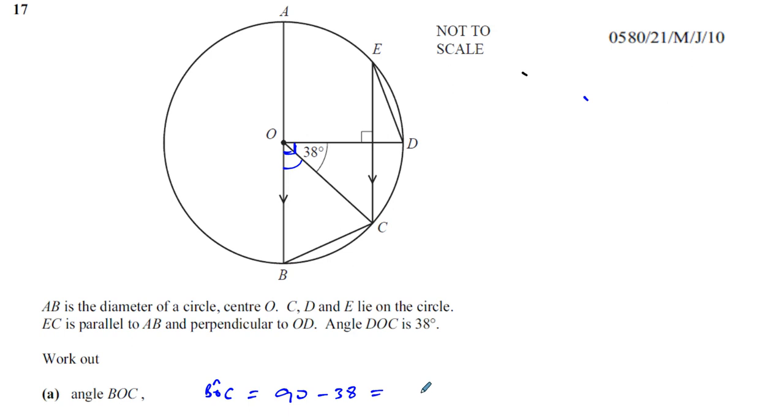Now, 90 minus 38 is going to be 52. So that's 52 degrees. So that's part A.